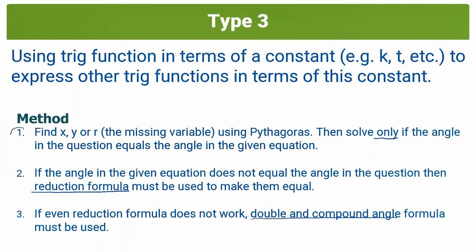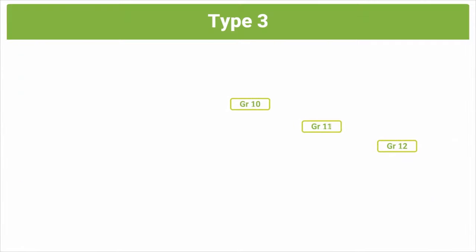Step one is primarily what you'd see in grade 10. Step two is primarily a grade 11 step, because you wouldn't have learned about reduction formula until grade 11. And you only learn about double and compound angle formula in grade 12, so you can only use step three in grade 12 — though in grade 12 you could still be asked questions requiring only steps one or two.